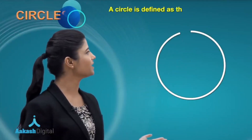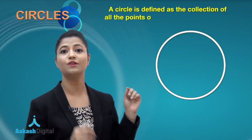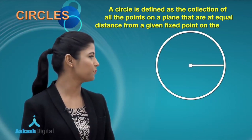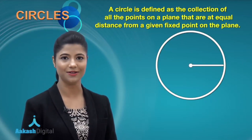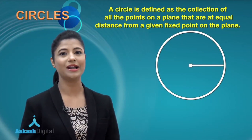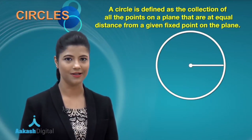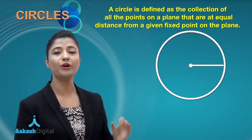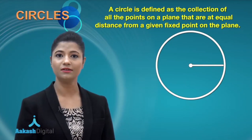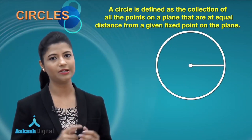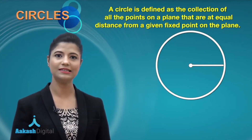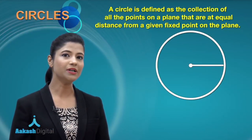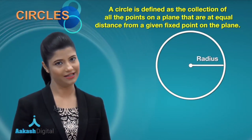A well-defined collection of points which are equidistant from a fixed point called the center is called a circle. Each and every point lying on the circle is at an equal distance from the center, and this equal distance is called the radius.